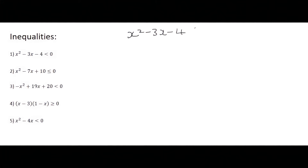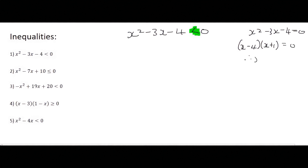The way it works is as follows. We'll start with number one, which says x squared minus 3x minus 4. You can go ahead and solve that as if pretending that this was an equal sign. This one will factorize quite nicely as x minus 4 times x plus 1 equals 0. Therefore, x would equal to 4, and x would equal to minus 1.